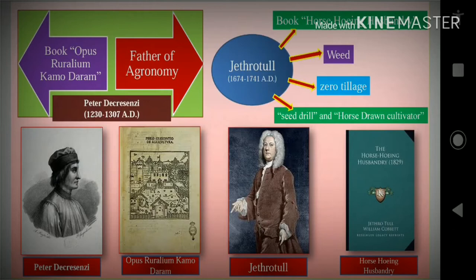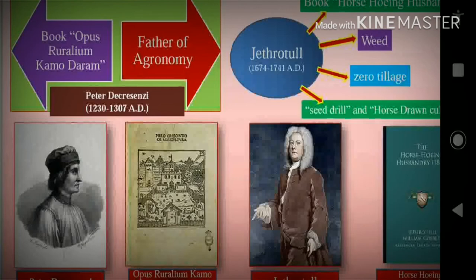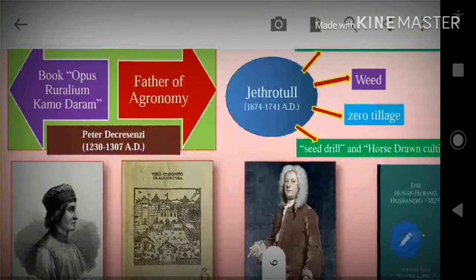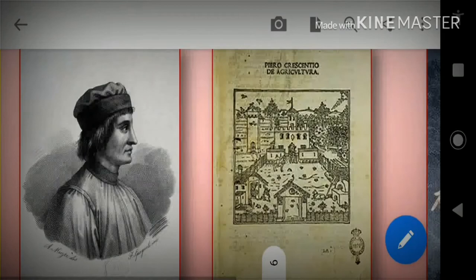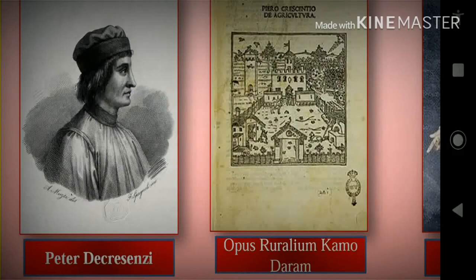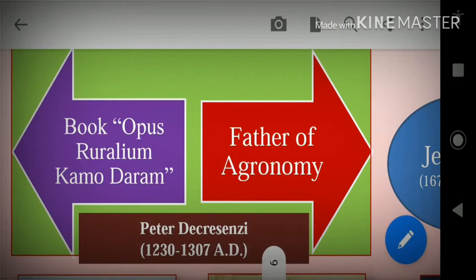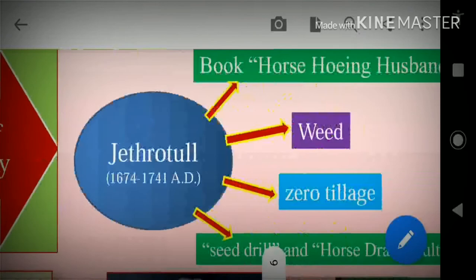We will know about two renowned persons related to agriculture. The first is Peter Dekrezenji. Peter Dekrezenji wrote a book called Opus Ruralium Commodorum. He is also the father of agronomy. Who is the father of agronomy? Peter Dekrezenji.